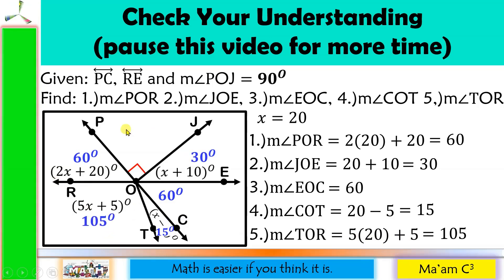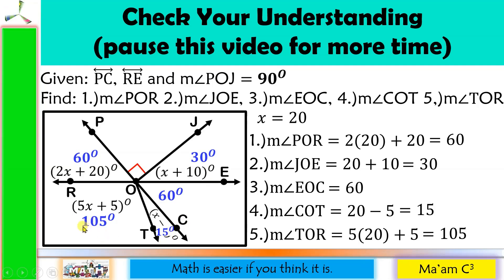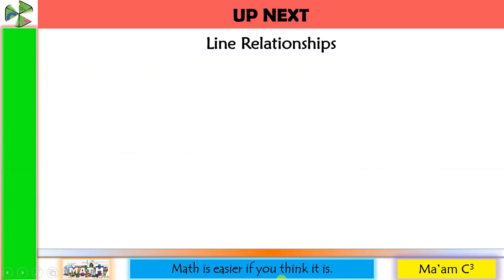To check, let us add everything: 60 plus 90 plus 30 plus 60 plus 15 plus 105 equals 360 degrees — a complete angle. Therefore, our answers are correct. Our next lesson is Line Relationships.